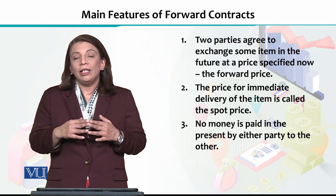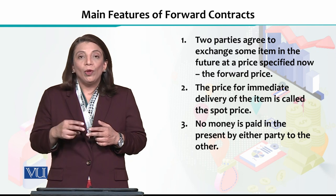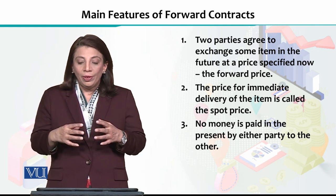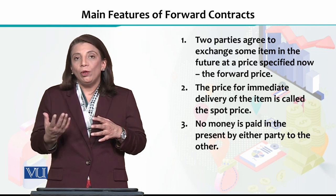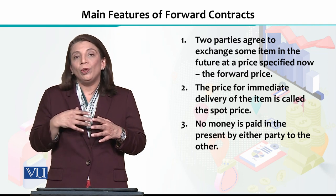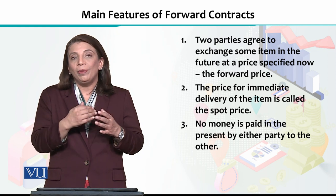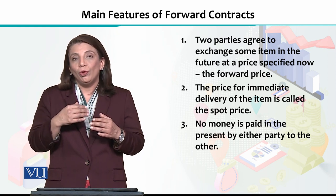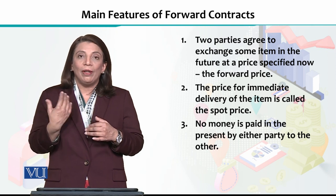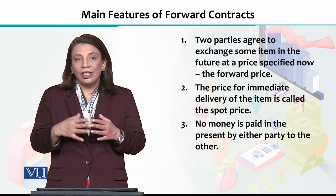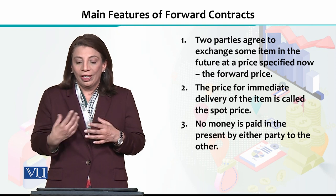The first feature is that there have to be at least two parties making an agreement to exchange some item. It could be any good, any financial instrument, any investment tool you have used. You can buy goods or forward contracts through which you arrange future exchange.